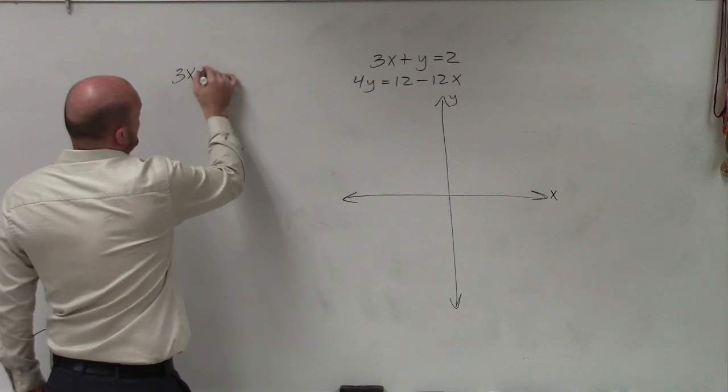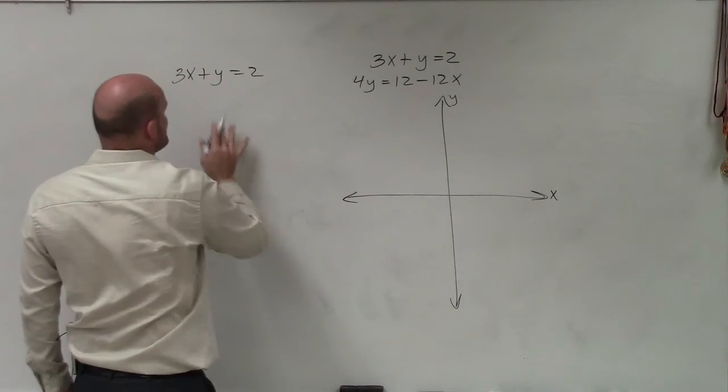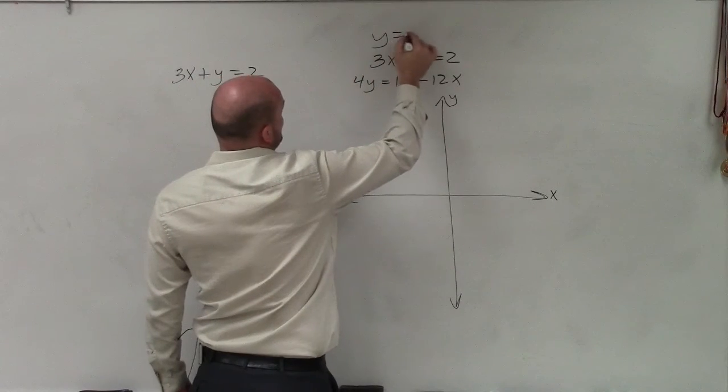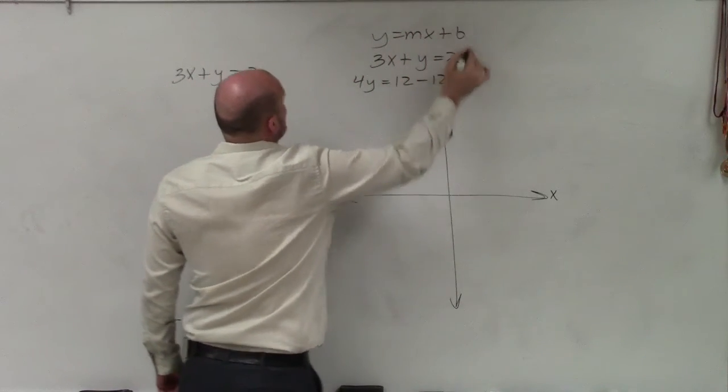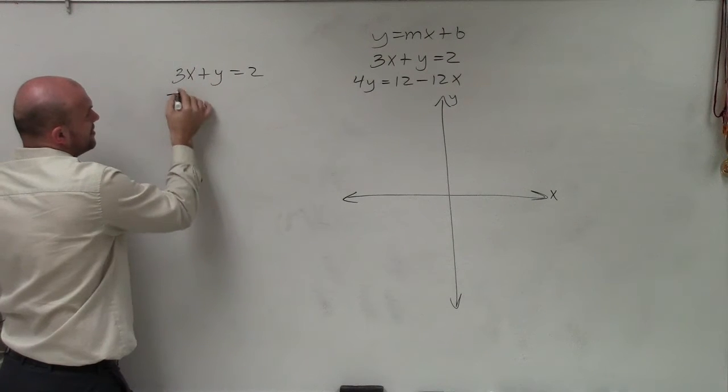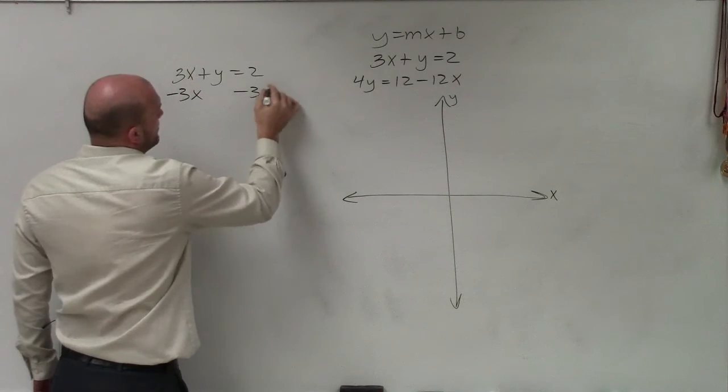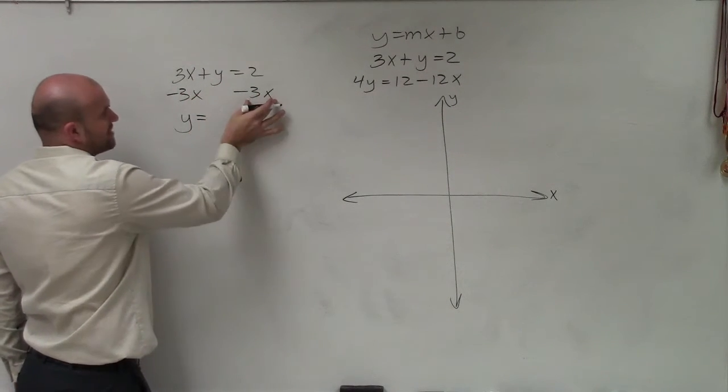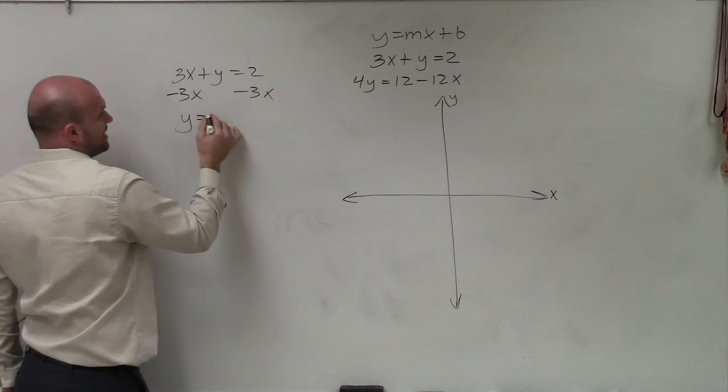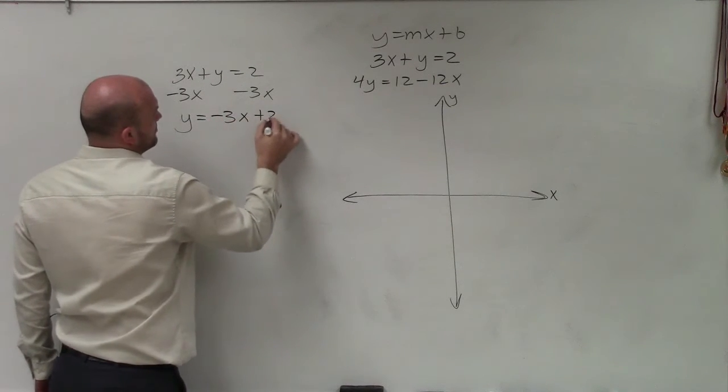I'll take the first equation, 3x plus y equals 2. To put this in the slope-intercept form, which is y equals mx plus b, the first thing I'm going to have to do is isolate my y variable, so I'll subtract the 3x on both sides. And we always like to write the variable in front of the constant, so I'll have negative 3x plus 2.